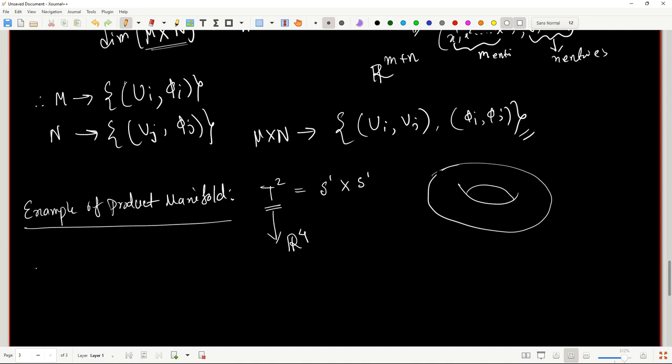Similarly, Tn, that is the n-torus which is just the Cartesian product of n circles, is also a product manifold.